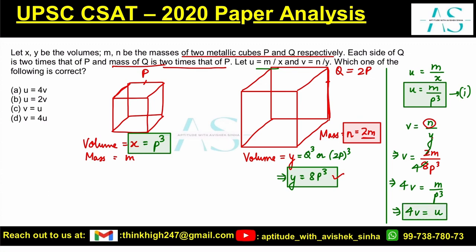Now see which option is given. U is equal to 4v. Option a is absolutely correct. This is what we have from our derivation, and this is what we have exactly in one of our options. So option a is our correct fit here. I hope this helps you.